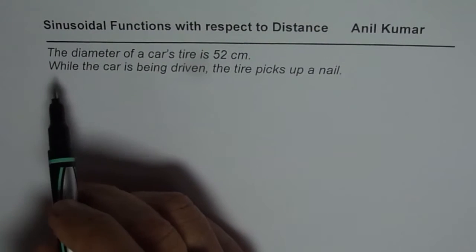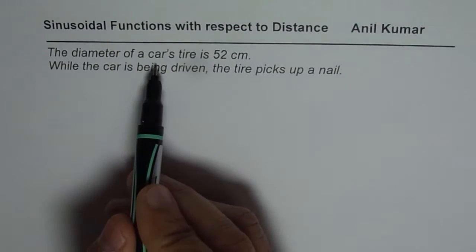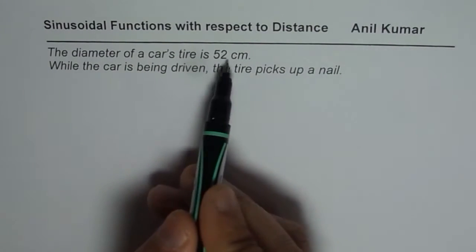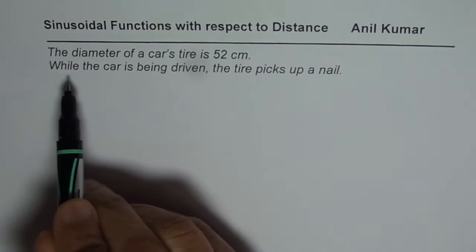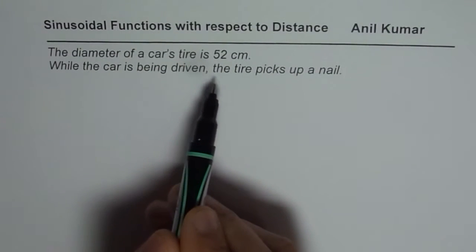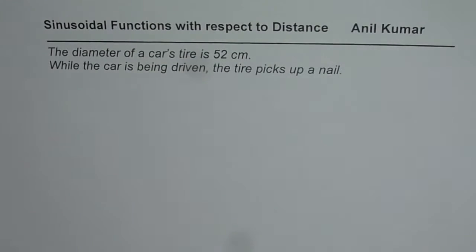The question is, the diameter of the car's tire is 52 cm. While the car is being driven, a tire picks up a nail. So that is the situation.